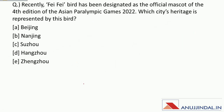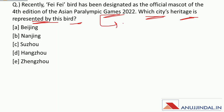Fei Fei Bird has been designated as the official mascot of the 4th edition of the Asian Paralympic Games 2020. Which city's heritage is represented by this bird? The correct answer is Hangzhou — Fei Fei Bird represents Hangzhou's heritage.